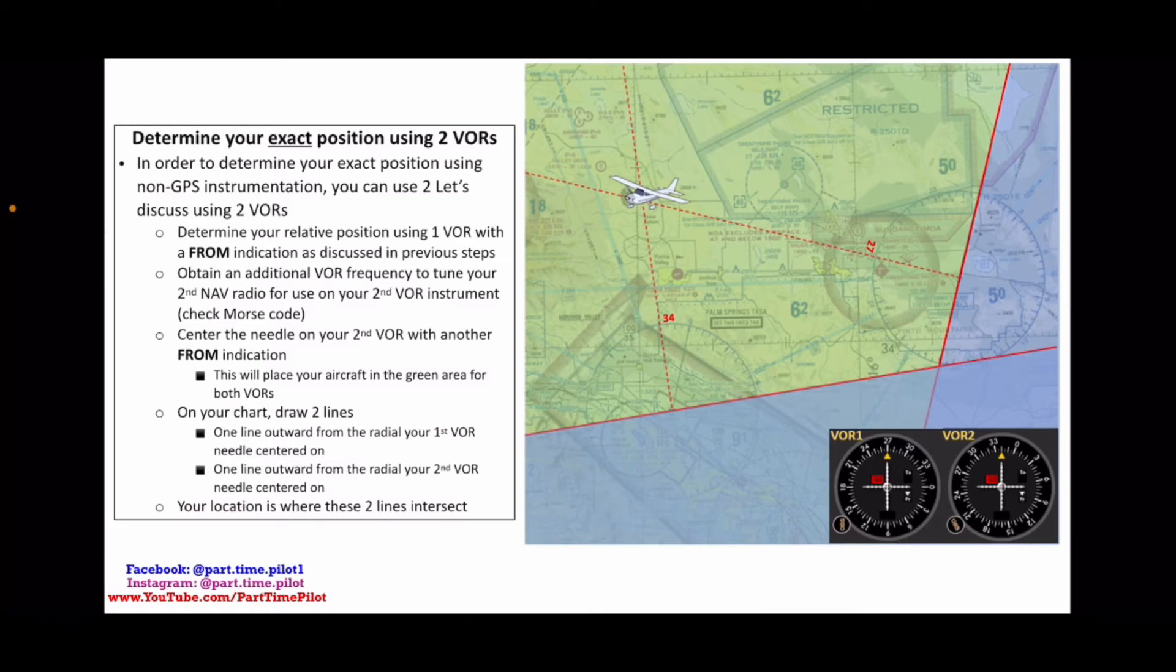Then on your chart, draw two lines. Draw one line outward from the radial that your first VOR is centered on. So the center of that VOR outwards on the radial all the way out. And then you're going to draw a line outward from the radial on your second VOR needle that your needle is centered on.